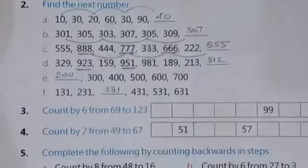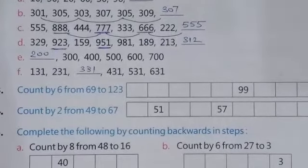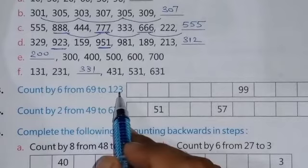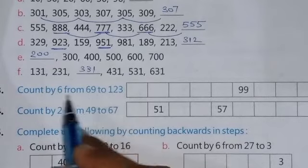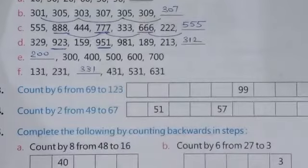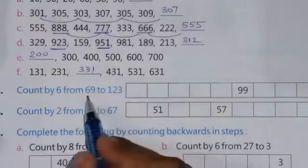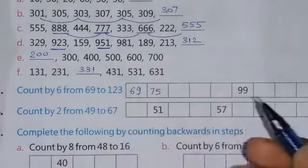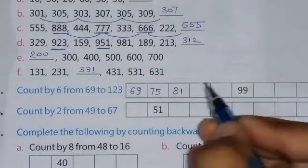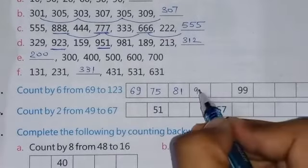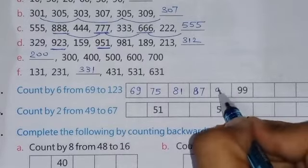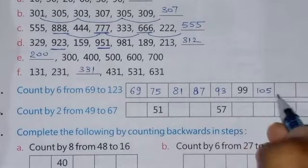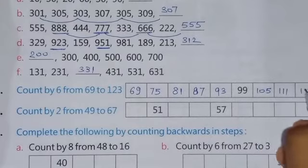Next question number third, the question is count by 6 from 69 to 123. Count by 6 from 69 to 123, it means start from 69, count 6 and then write in this box. So starting from 69, 69 plus 6 there will be 75, 75 plus 6 is 81, 81 plus 6 is 87, 87 plus 6 is 93, 93 plus 6 is 99, 99 plus 6 is 105, plus 6 is 111, plus 6 is 117.